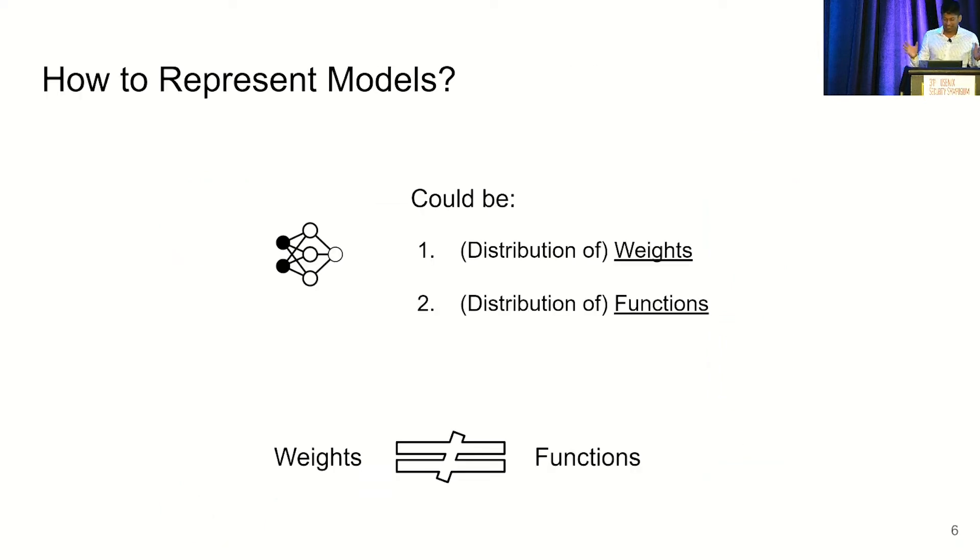But really, this high-level picture skips an important detail, which is what is a model? How do we represent models? And we could think of them either as a particular weight or distribution of weights, if training is random, or a particular function or distribution of functions. And the thing to keep in mind is that weights are not functions. If you have the same weights, you have the same function. But having the same function doesn't mean you have the same weights.